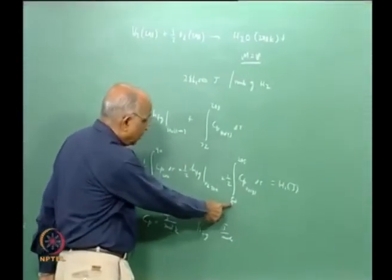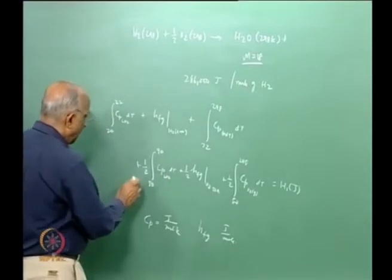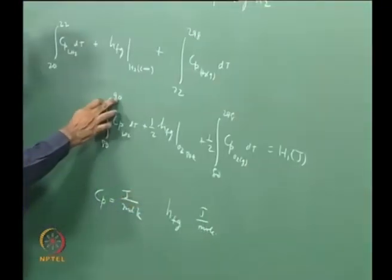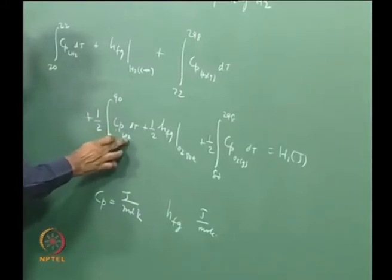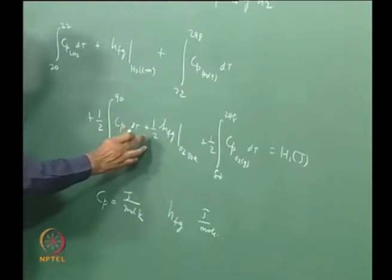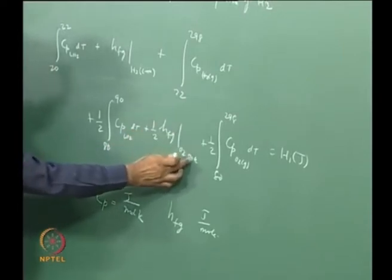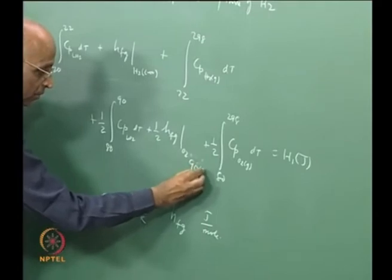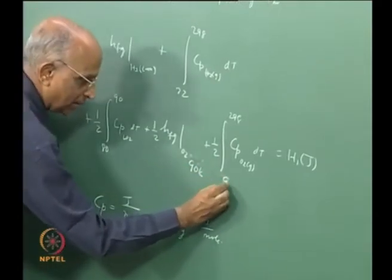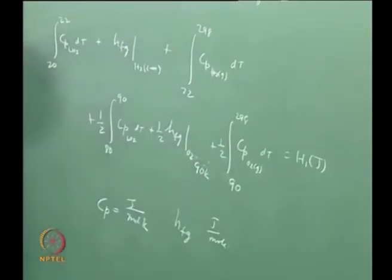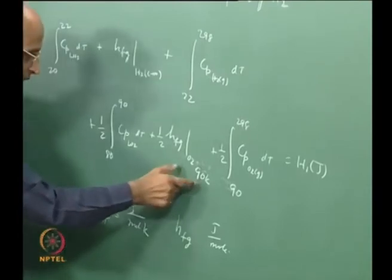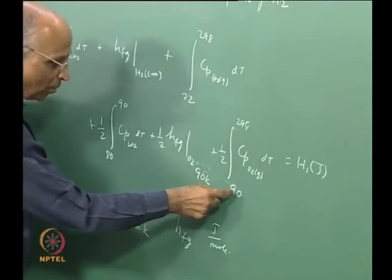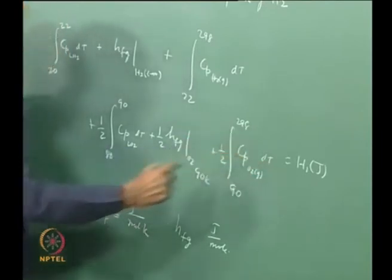To clarify: we take half a mole of oxygen from 80 K to the boiling temperature of 90 K as liquid (Cp·LO2·ΔT), then convert the half mole to vapor using latent heat at 90 K, then heat from the boiling temperature of 90 K to 298 K as a gas.